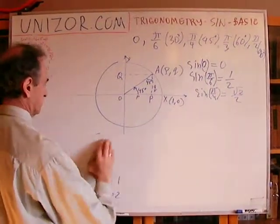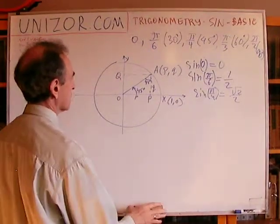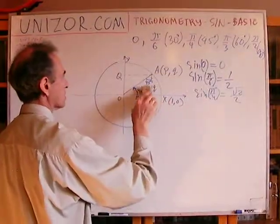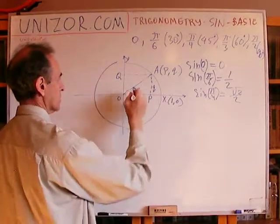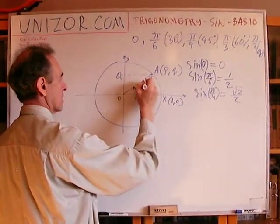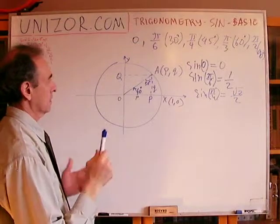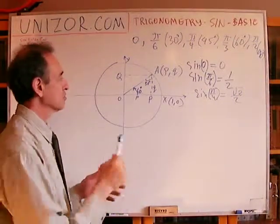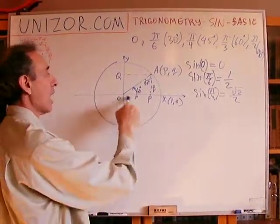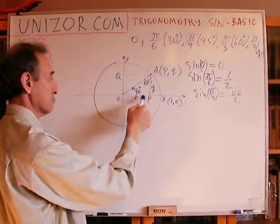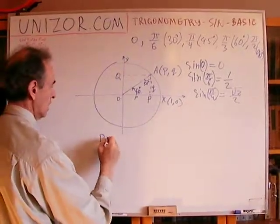Next. This is π over 3, 60 degrees. Okay. So this is 60 degrees. Now, this is 30 degrees, right? Now, we have a very similar situation to before. We have an angle of 30 degrees in a right triangle, which means that the opposite cathetus, which is P in this case, equals to half of the hypotenuse, right? So P is equal to one half.